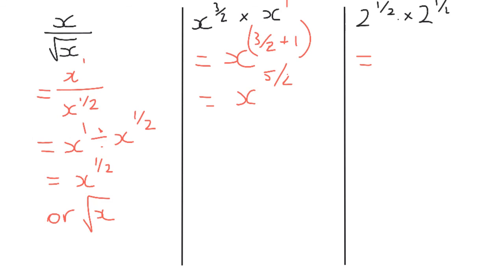So we could do this as a surd problem. We could turn it into root 2 times root 2. Now we know root 2 times root 2 is the root of 4, or we could keep it as the root of 2 squared which is 2.